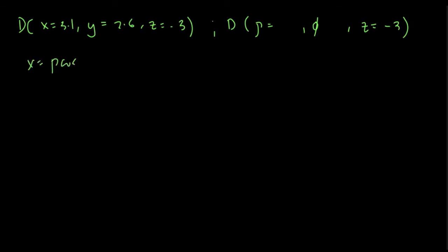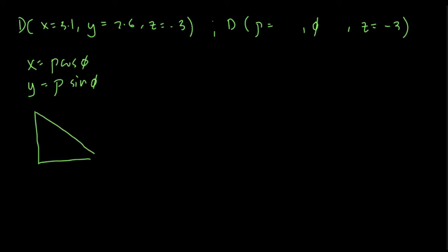We know that X equals rho cosine phi, and Y equals rho sine phi. If we make a graphical representation using trigonometry: X is the adjacent side to our angle phi, Y is opposite to our angle phi, and rho is the hypotenuse. By the Pythagorean theorem, rho is equal to the square root of X squared plus Y squared.